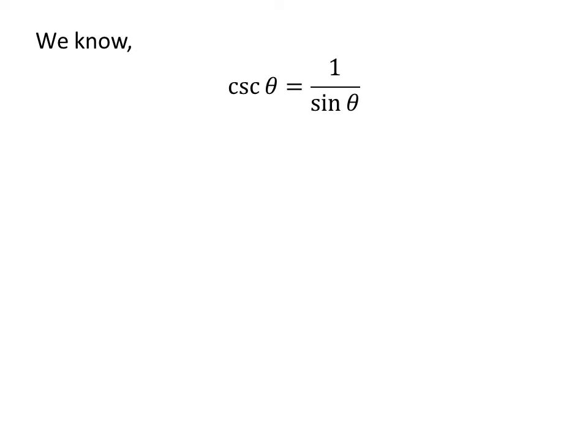We know cosecant of theta is equal to 1 upon sin of theta. So application of the above identity gives us cosecant of pi minus x is equal to 1 upon sin of pi minus x.